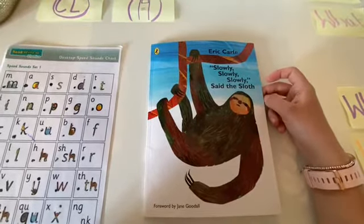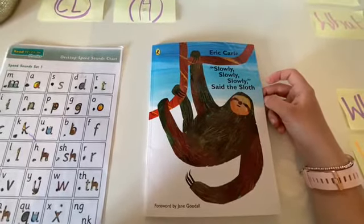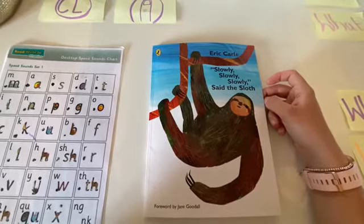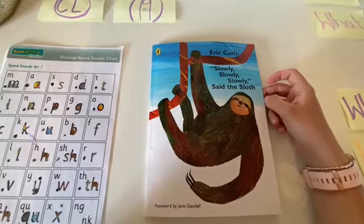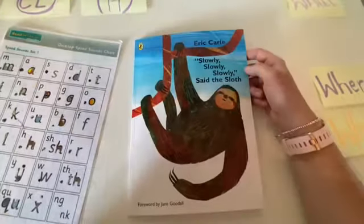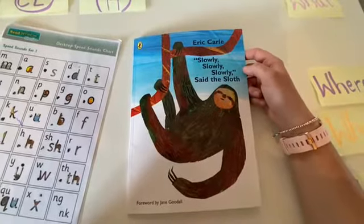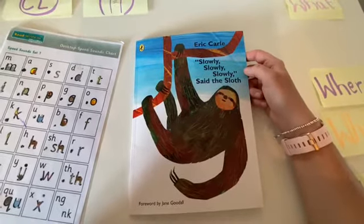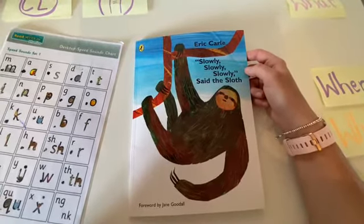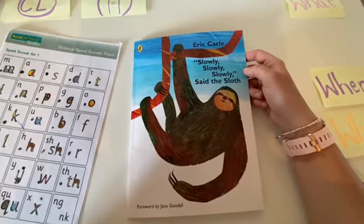Today what we're going to be doing is we're going to finish reading the story and then we're going to look at questions. In year one we need to be able to ask questions and we also need to be able to write questions using a question mark. So today we're going to have a little bit of practice.